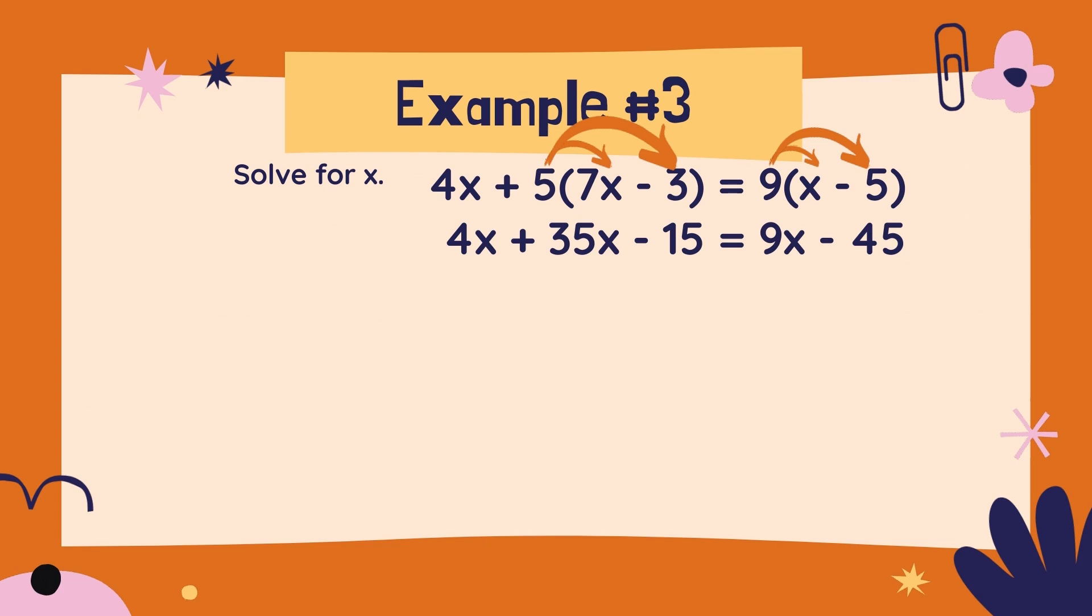Once you have made those changes and distributed the 5 and the 9, now we need to look and see where all the variables are. I see three terms that have x's. Two of them are on the left, and one of them is on the right. We can simplify the expression that's on the left side, 4x plus 35x minus 15.